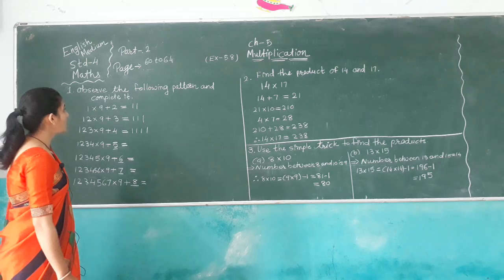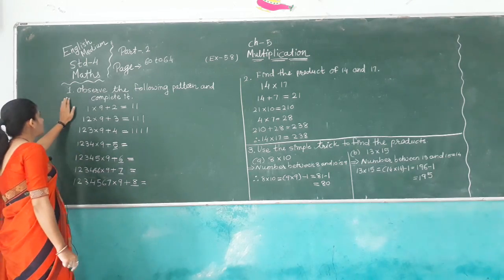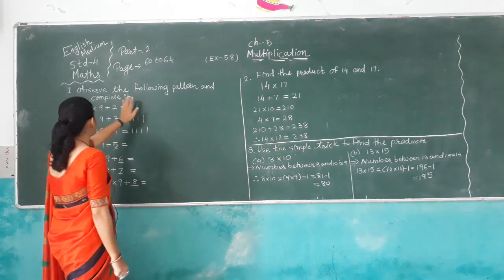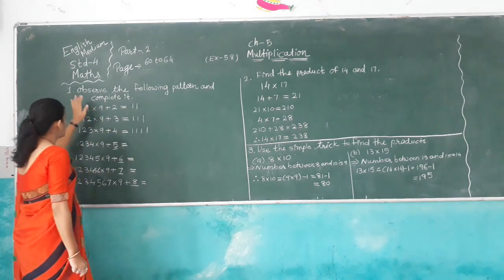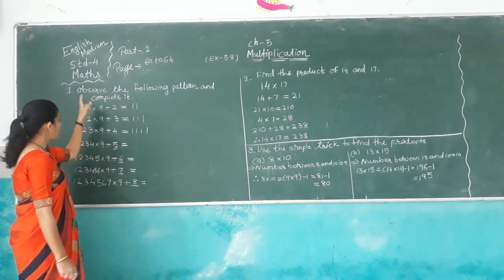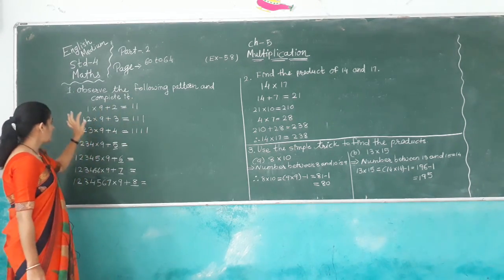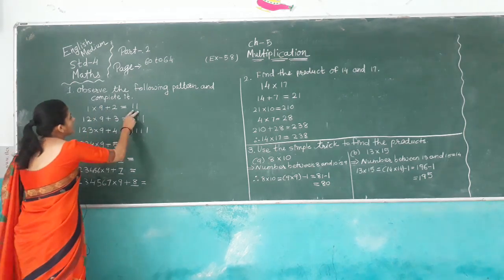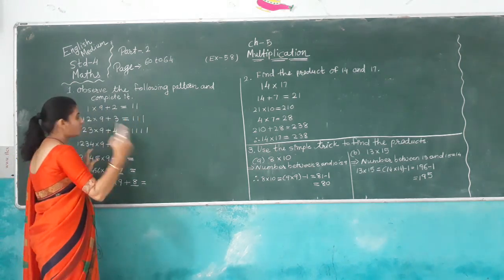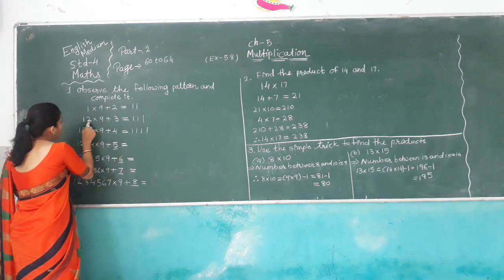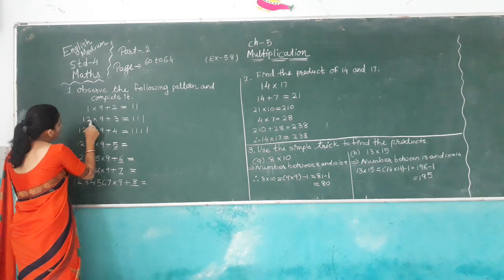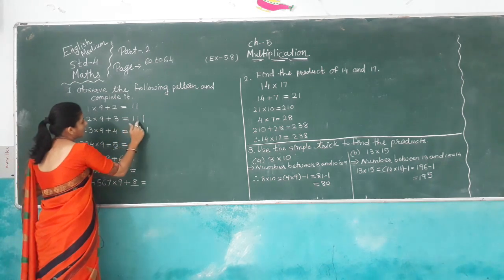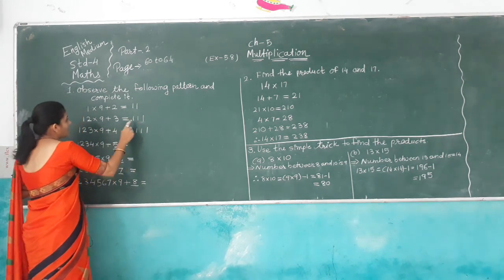Now next exercise, exercise number 5.8, question 1: Observe the following pattern and complete it. Here 1 multiplied by 9 plus 2, we get 21. Then 12 multiplied by 9 plus 3, we get 111.